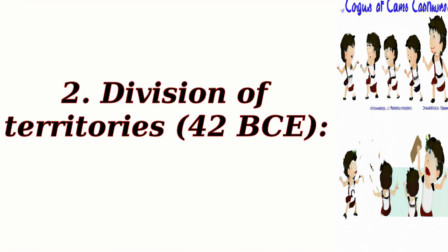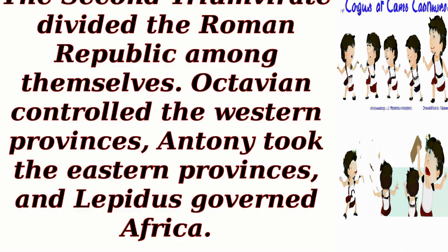2. Division of Territories, 42 BCE. The Second Triumvirate divided the Roman Republic among themselves. Octavian controlled the western provinces, Antony took the eastern provinces, and Lepidus governed Africa.